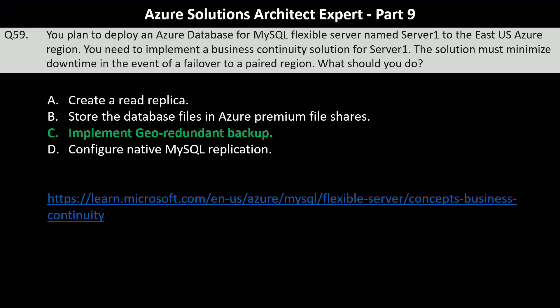The geo-redundant backup feature in Azure Database for MySQL allows automatic backups to be stored in a different geographic region. In the event of a region-wide service disruption, you can restore the database from the geo-redundant backup, which helps minimize downtime. Other options do not provide business continuity in case of regional failures.